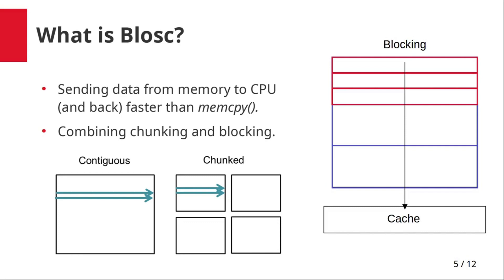One of the most important advantages of Blosc is its ability to use multithreading for reading and decompressing several chunks and even blocks at the same time. Moreover, Blosc implements a block mask capability that allows selectively choosing what blocks are to be decompressed inside the chunk.